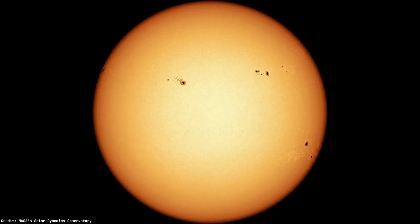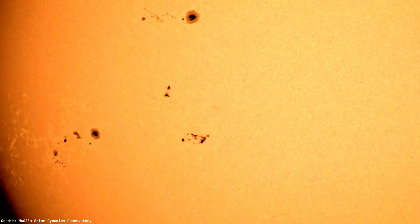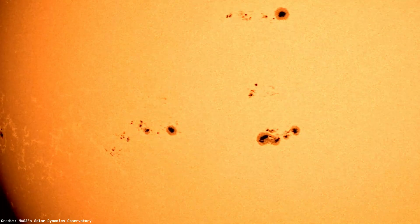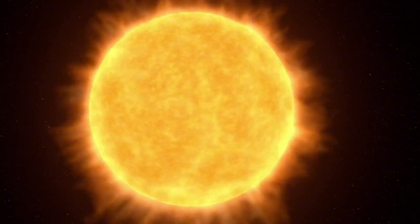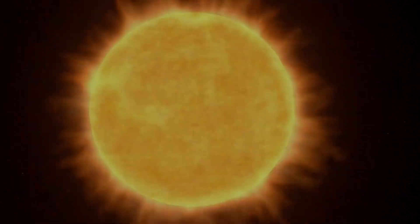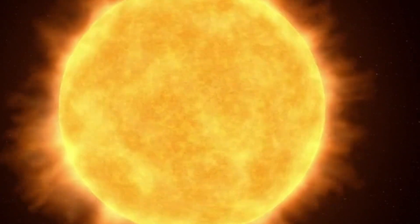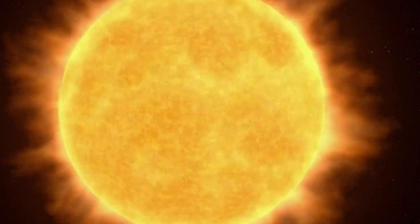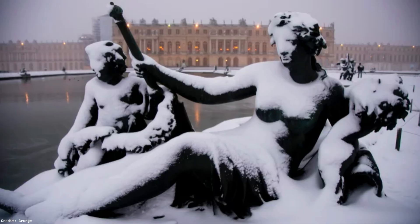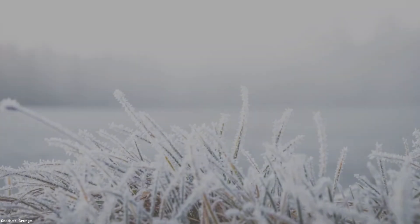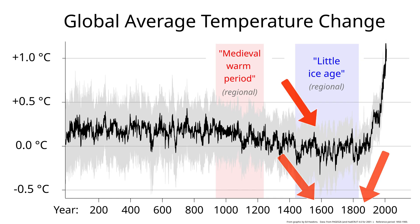Sunspots aren't just random. They follow a pattern. The sun goes through an 11-year cycle, swinging between calm and chaos. During the peak, called the solar maximum, the surface is littered with sunspots, and the sun is throwing tantrums left and right. Solar flares, CMEs, the whole cosmic fireworks show. But here's where it gets really interesting. Between 1645 and 1715, something weird happened. Sunspots all but vanished during a period called the Maunder Minimum. And at the same time, Europe plunged into a deep chill known as the Little Ice Age. Rivers froze. Crops failed. It suggests a fascinating connection. When the sun quiets down, Earth's climate might change too.